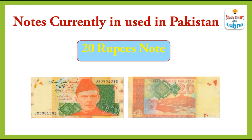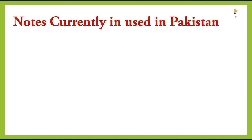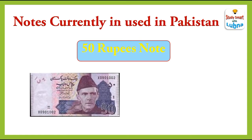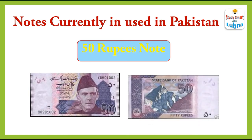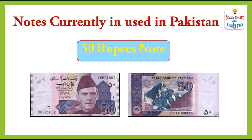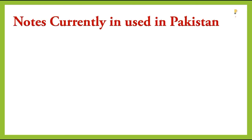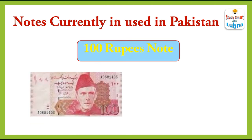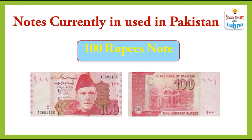This is the back side of twenty rupees note. Fifty rupees note: this is the front side of fifty rupees note and this is the back side of fifty rupees note. Hundred rupees note: this is the front side of hundred rupees note and this is the back side of hundred rupees note.